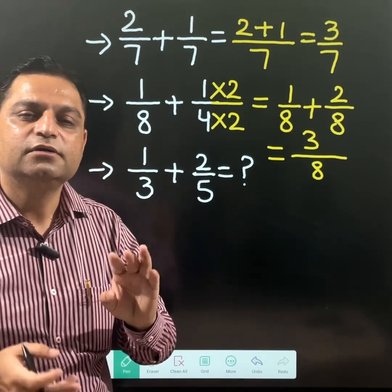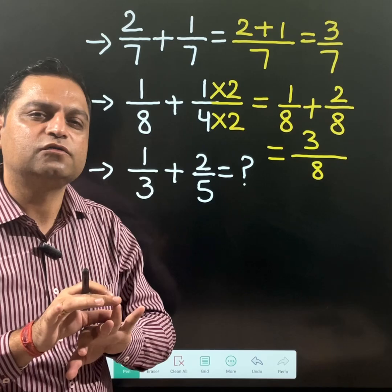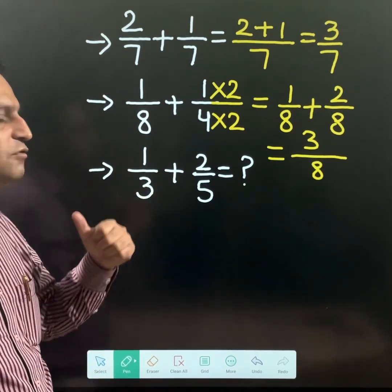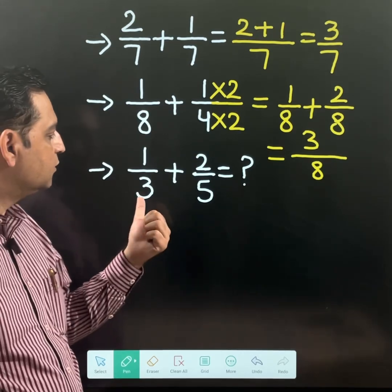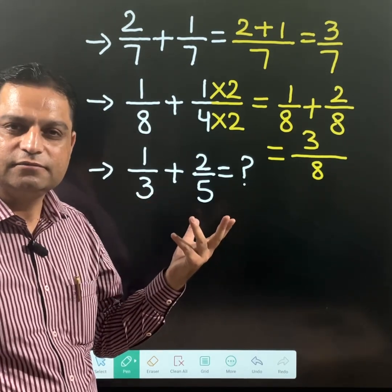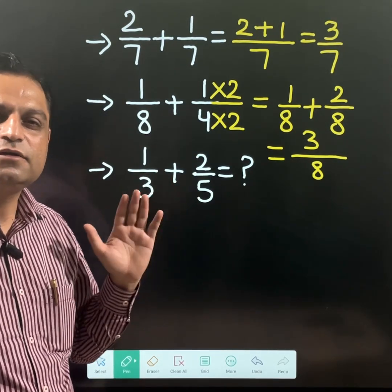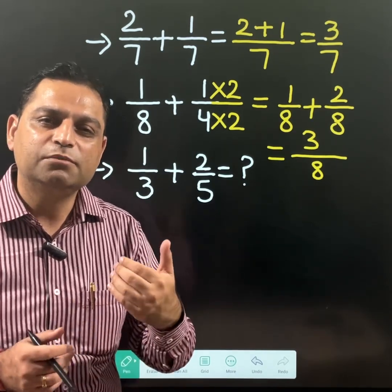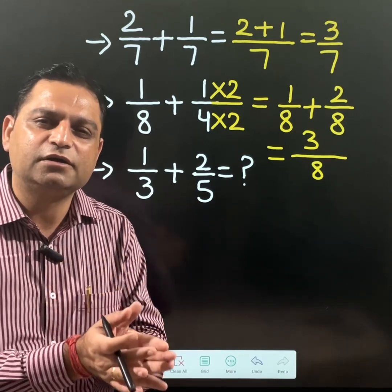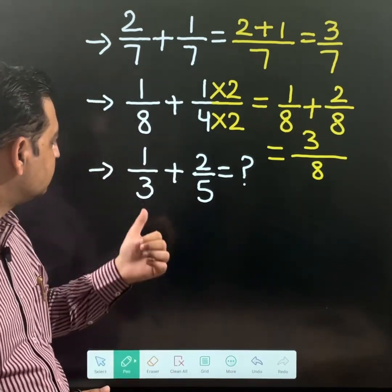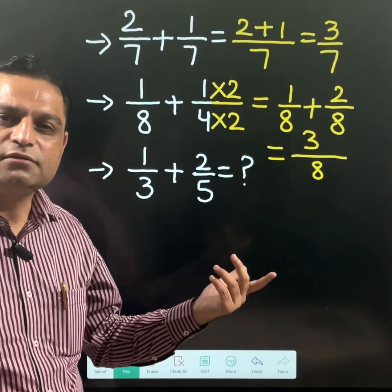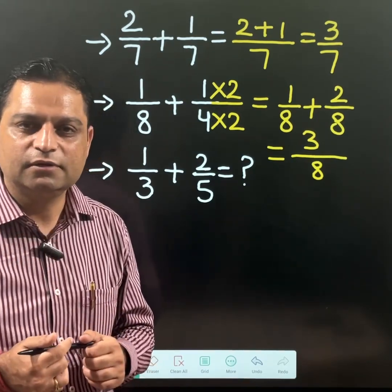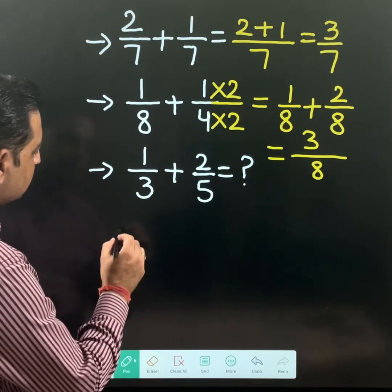Come to the last example which we have taken. The denominator is 3 and 5. When the denominator is 3 and 5 and both are primes, when both numbers are prime, their LCM is just their multiplication. Their LCM is 5 times 3, which is 15. That means we can make the denominator 15.